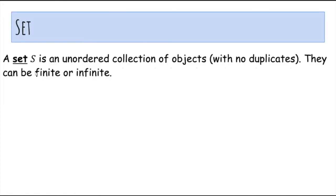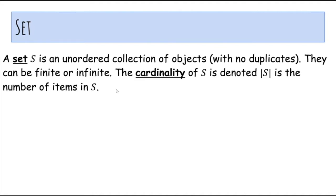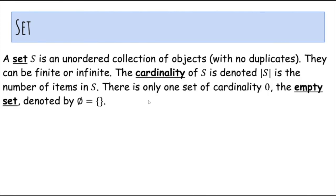A set S is an unordered collection of objects with no duplicates. They can be finite or infinite. The cardinality of S is denoted using this absolute value symbol, and it's just the number of items in S. There is only one set of cardinality zero, which is the empty set, denoted using this symbol or using brackets.